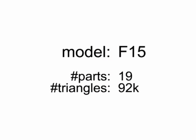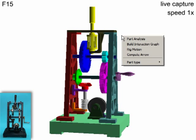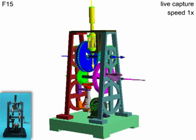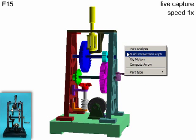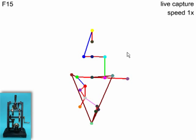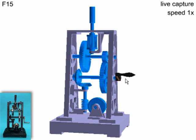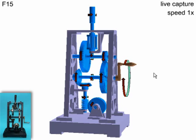Now we present some results and interaction sessions of our system. First we perform geometry analysis to construct the interaction graph. The user selects the driver and we compute the motion for the assembly. We then compute the arrows as described before and extract the causal chain sequence.